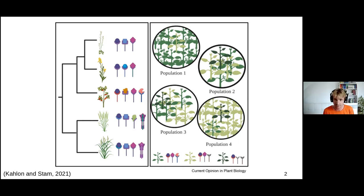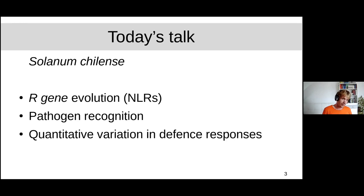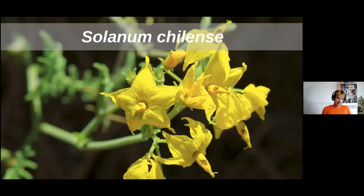To address this, you need a model system. Since I've always loved solanaceous species — I did my PhD on cultivated tomato and master projects on potato — we start with Solanum. Today I'll introduce my work on Solanum chilense, a wild tomato species from Chile and Peru. I'll cover three different aspects: the evolution of classical NLR resistance genes, variation in pathogen recognition, and quantitative variation in defense responses.